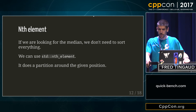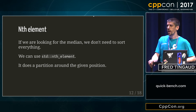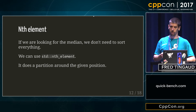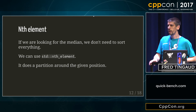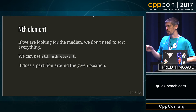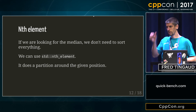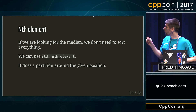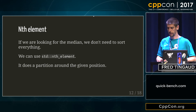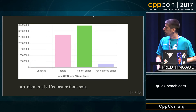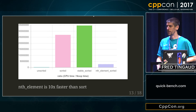Another interesting algorithm is nth_element. For example, if you're looking for the median of a vector, you give it a position inside the vector and it will partition the vector around that position, putting the right element in that position as if it were sorted. It's way faster than a full sort if you're looking for a median — so it's a great algorithm.